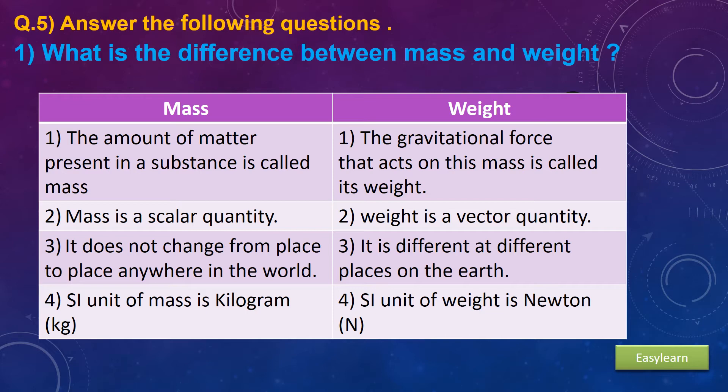Second, mass is a scalar quantity. Weight is a vector quantity. Mass does not change from place to place anywhere in the world. Weight is different at different places on earth. The SI unit of mass is kilogram. The SI unit of weight is Newton.